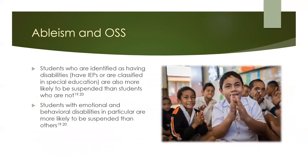Another disparity in out-of-school suspension is along the lines of disability. Students who are identified as having disabilities, especially emotional and behavioral disabilities, are more likely to be suspended than students who are not designated as having a disability. This means that students with disabilities are more likely to experience the negative outcomes that come along with out-of-school suspension than students without disabilities.